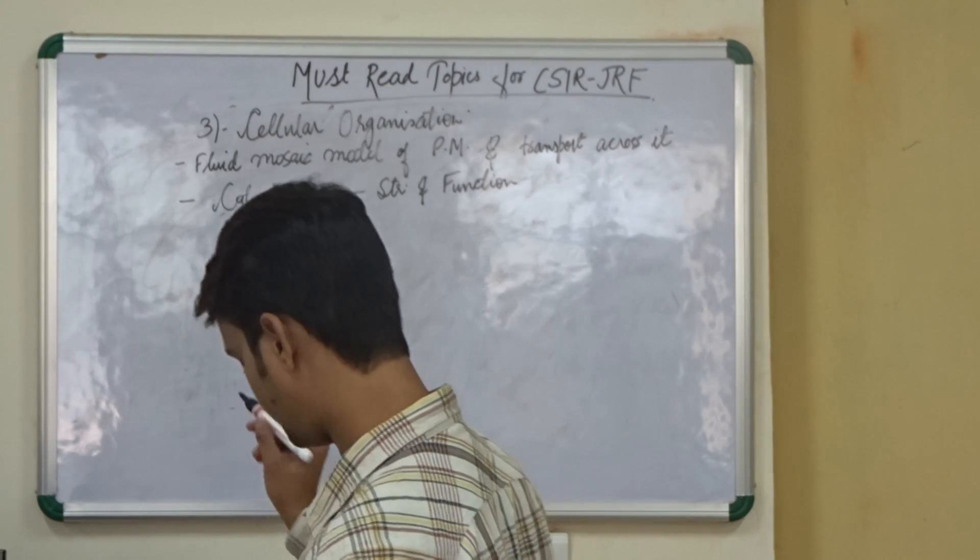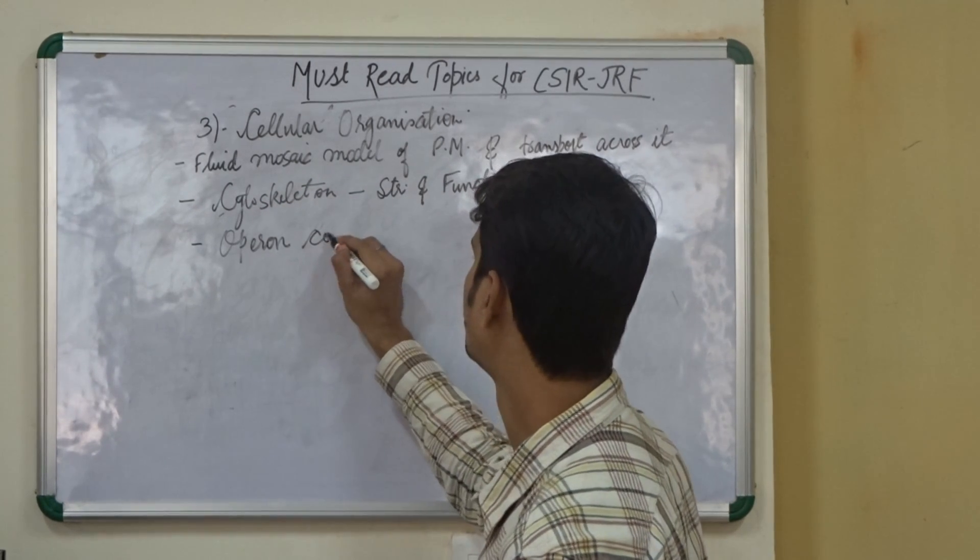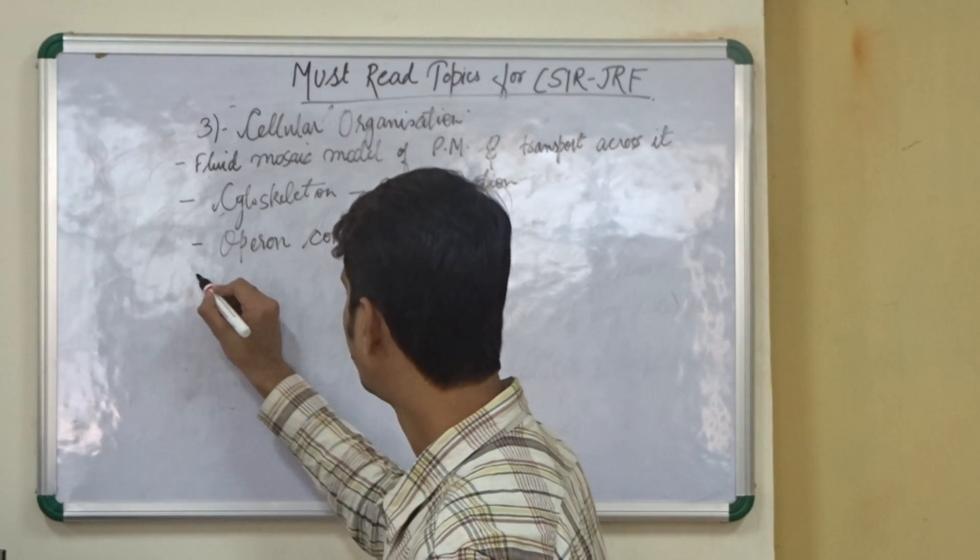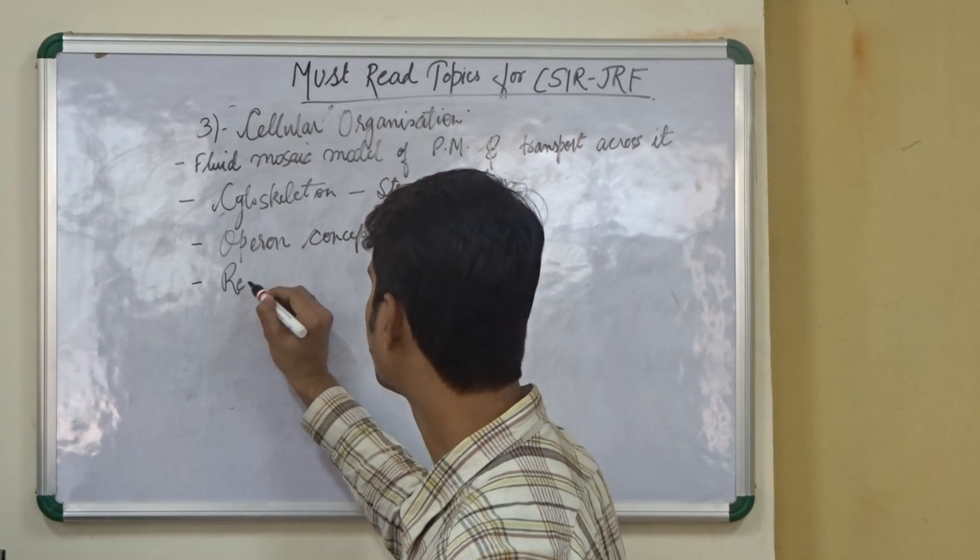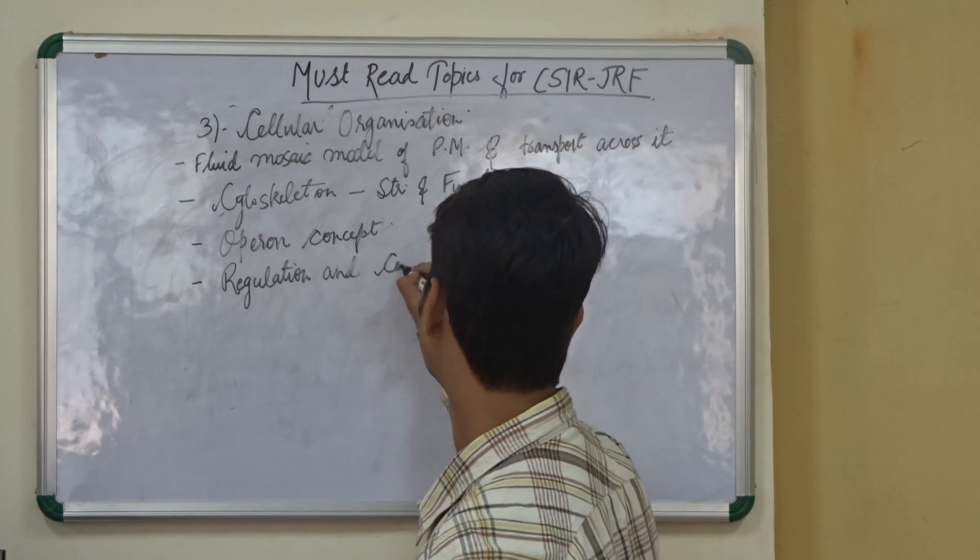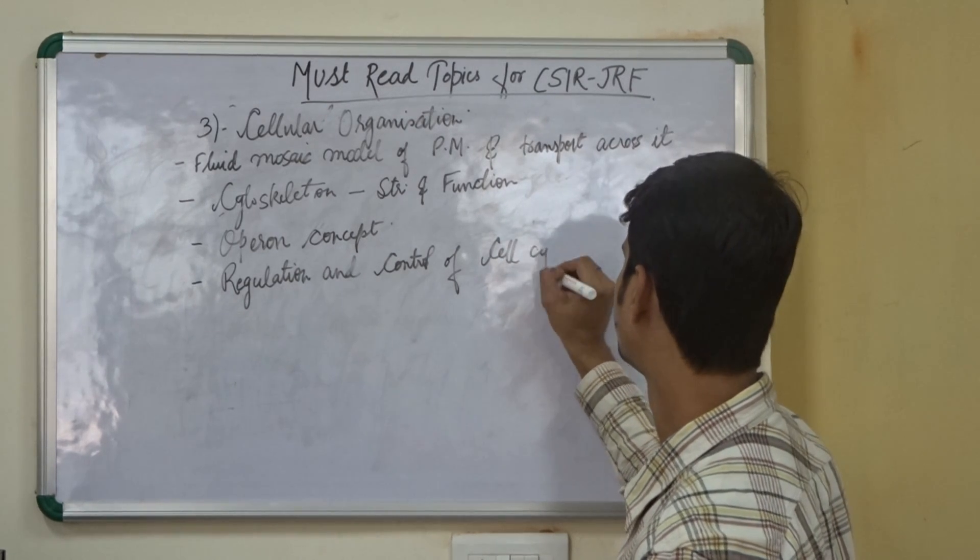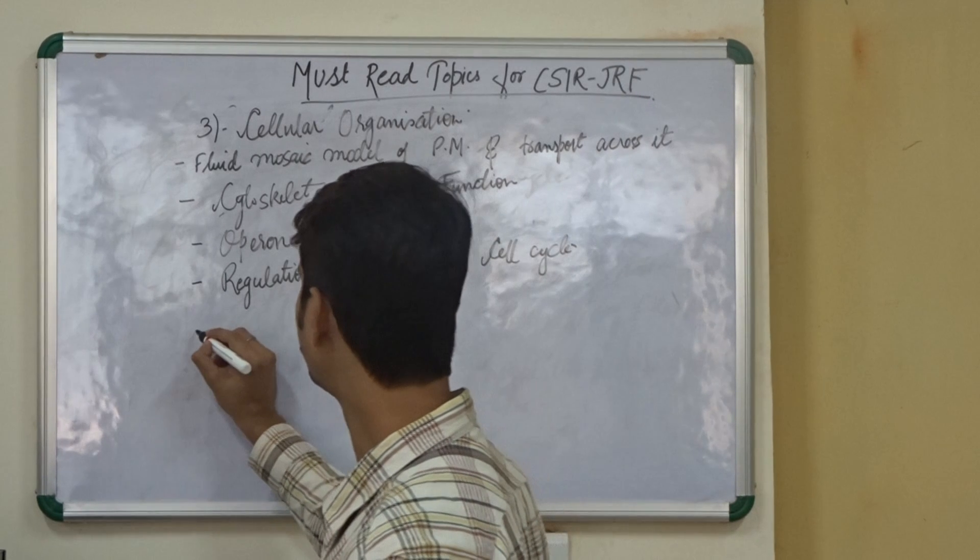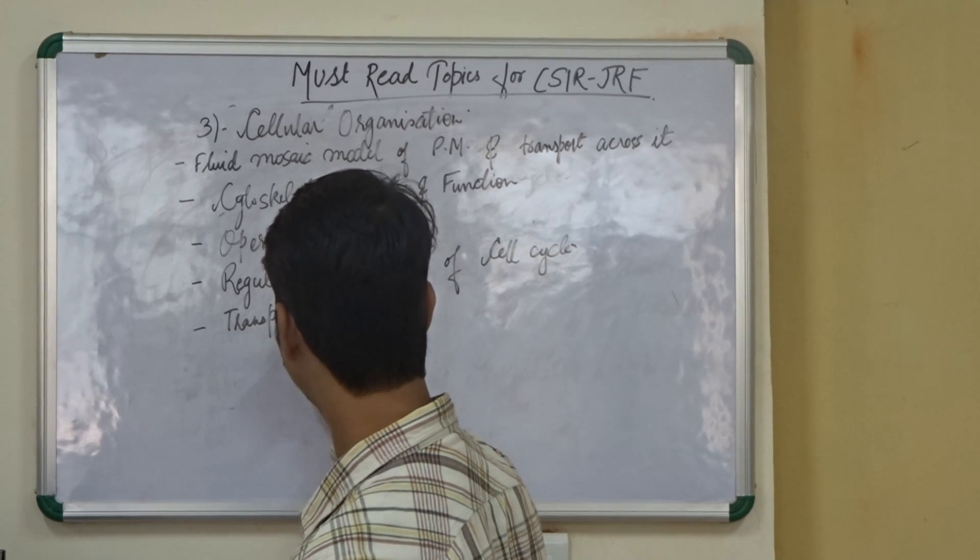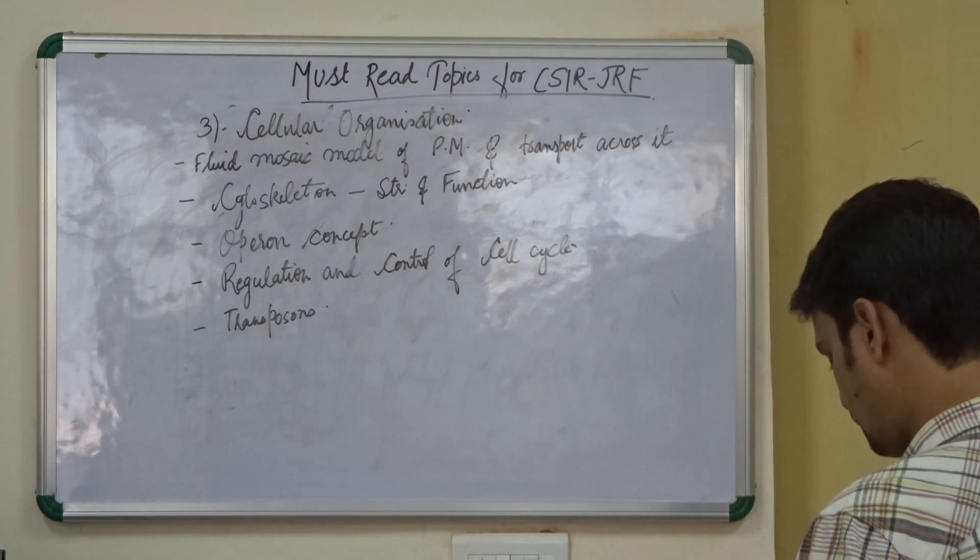The third important thing is, we need to know about the operon concept. The lac operon, tryptophan operon, we need to know about it. Next is the regulation and control of cell cycles. And finally, we need to know about the transposons.